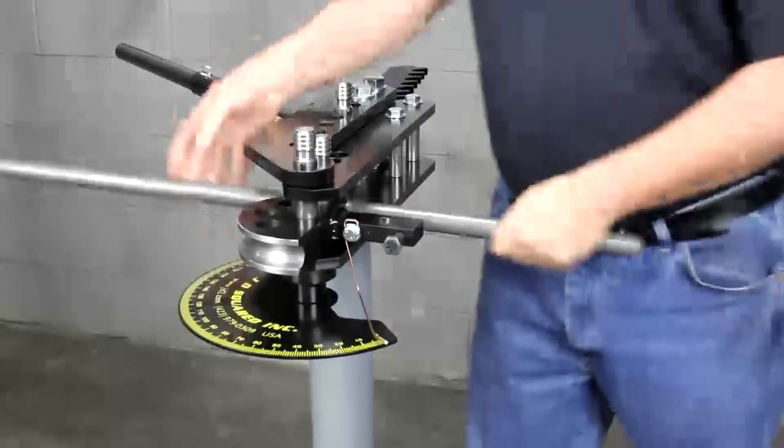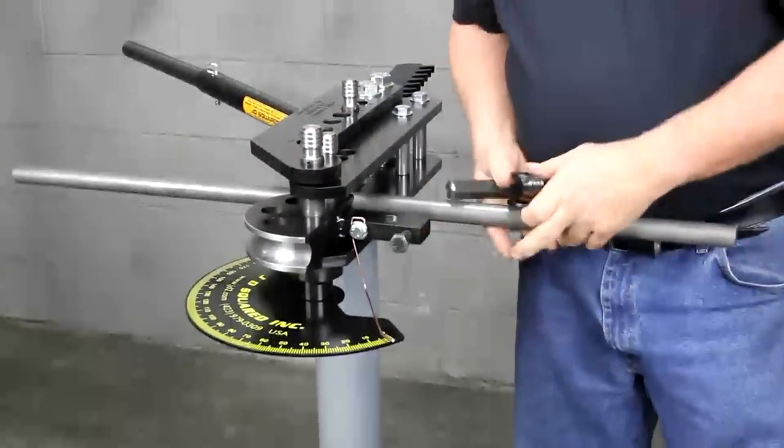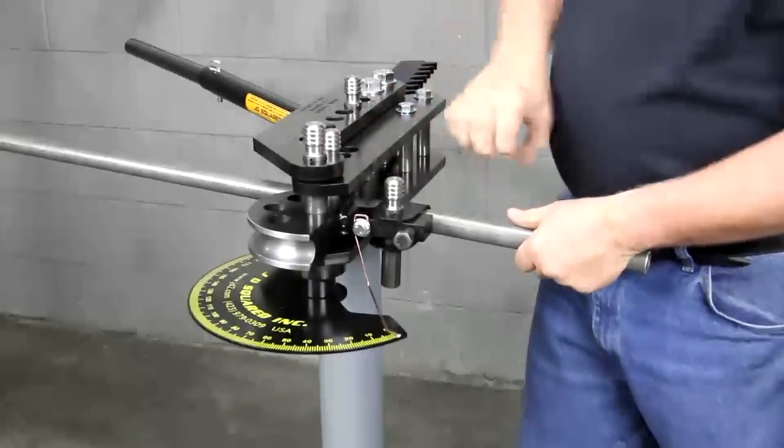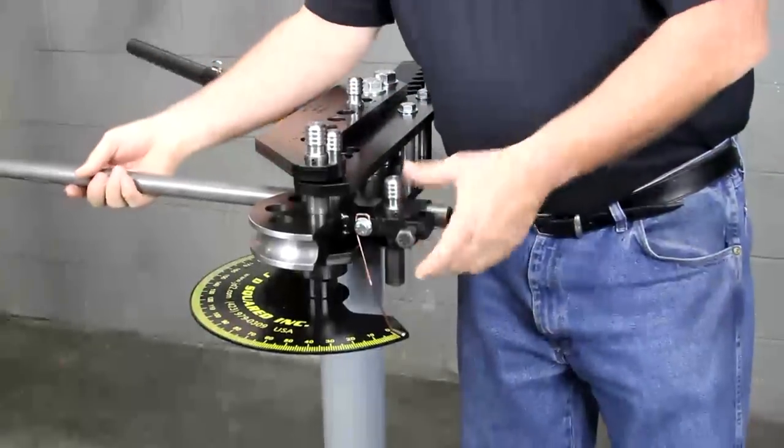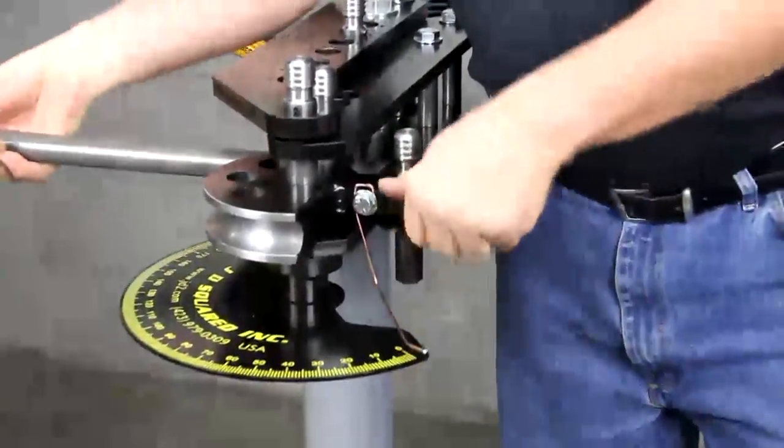What I do is I typically put the die in first, of course, and then I like to put the U-strap on. Some people put the follow bar in and then fiddle with feeding the tubing through it. It just creates unnecessary problems because I have lots of room to work right here, so we can just pop this thing right in here.